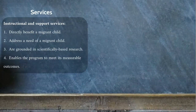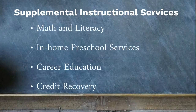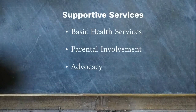What services does the program provide? This program provides instructional and support services that directly benefit a migrant child, address the needs of a migrant child, are grounded in scientifically based research, and enable the program to meet its measurable outcomes. Supplemental instructional services are provided in the areas of math and literacy, in-home preschool and school readiness, career education, and credit recovery. Supportive services include basic health services, parental involvement, advocacy, and social outreach.